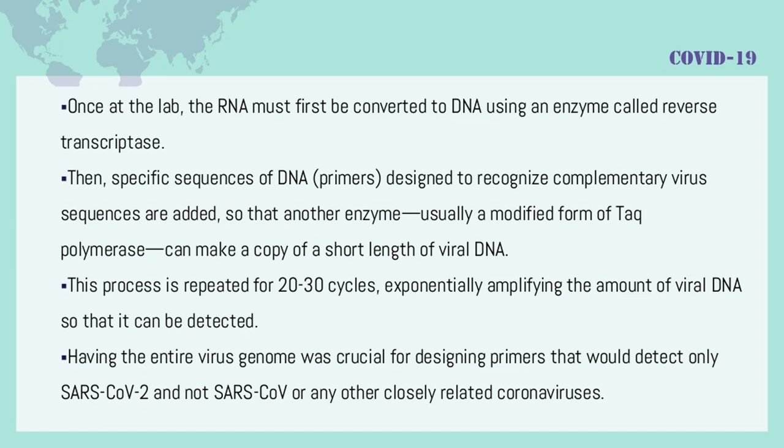Once at the lab, the RNA must first be converted to DNA using an enzyme called reverse transcriptase. Then, specific sequences of DNA (primers) designed to recognize complementary virus sequences are added, so that another enzyme — usually a modified form of Taq polymerase — can make a copy of a short length of viral DNA. This process is repeated for 20 to 30 cycles, exponentially amplifying the amount of viral DNA so that it can be detected. Having the entire virus genome was crucial for designing primers that would detect only SARS-CoV-2 and not SARS-CoV or any other closely related coronaviruses.